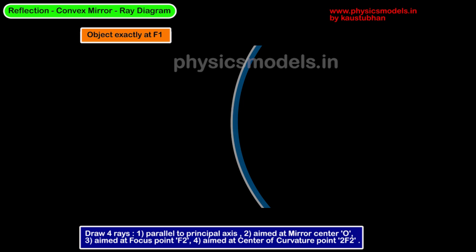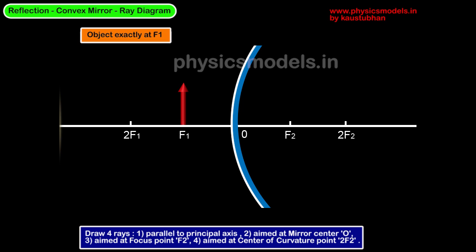Now we will bring the object even closer to the mirror and place it exactly at the focal point F1. Let's see what happens in this case. The object is on F1.